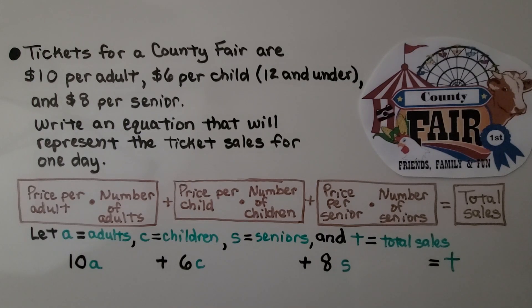We have our equation. Depending on what the number of adults, number of children, and number of seniors are is going to depend on what the total sales will be.